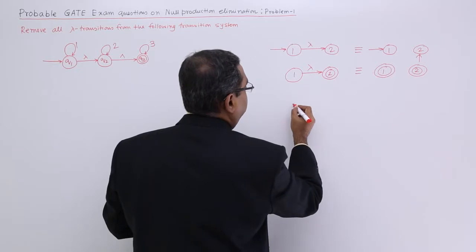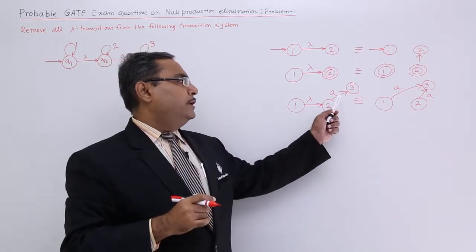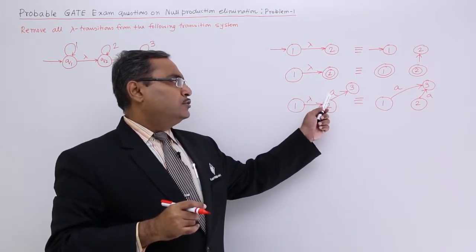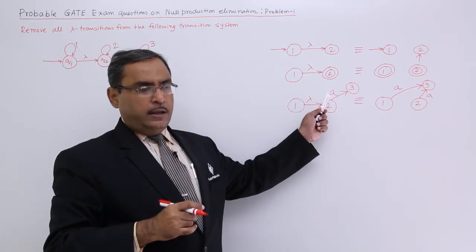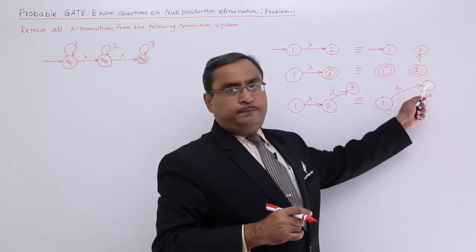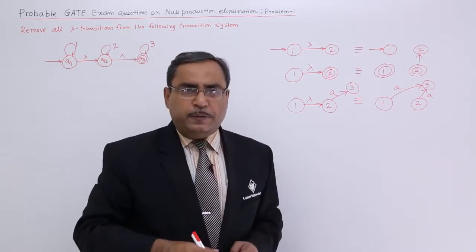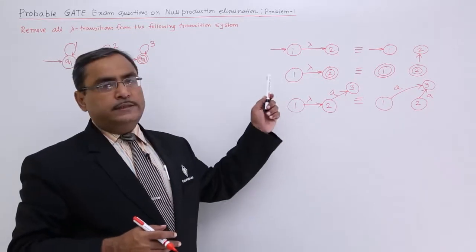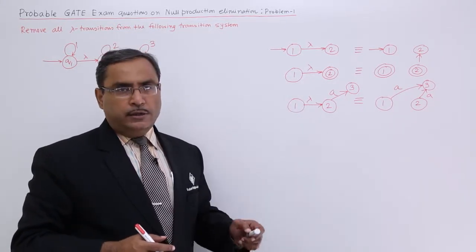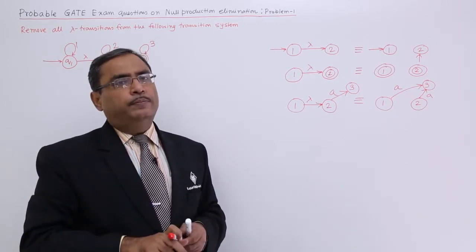Another rule was there. That means, whatever the outward edges are coming out from this state 2, please mark that edge and also consider that level and draw the same edge from this particular one to that particular next state with the same level. So that was my another rule. In my previous video, they were discussed. I have done the summary here. Now, let me apply this concept, these rules in my given problem.